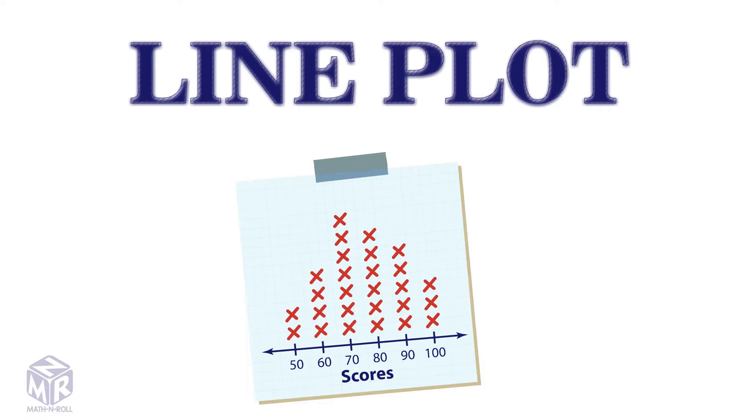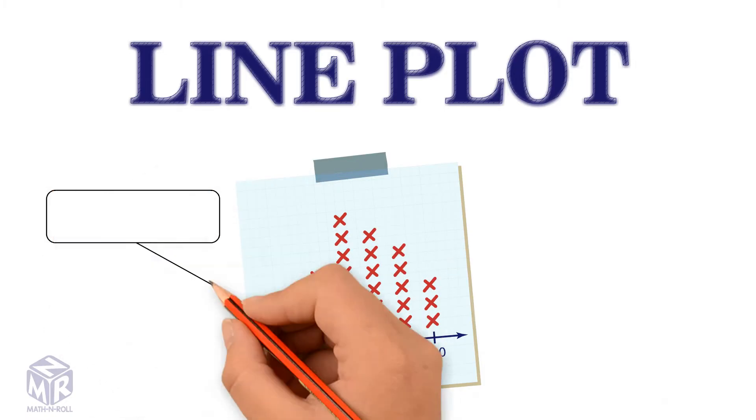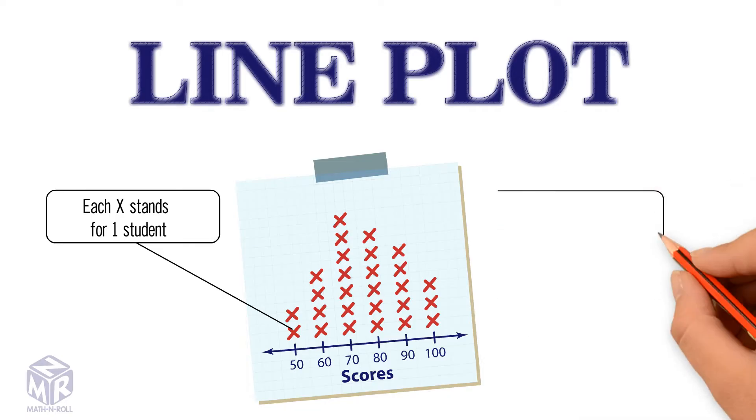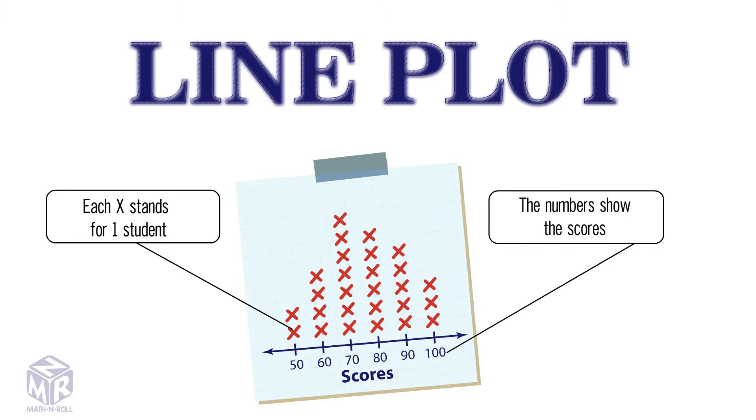This is a line plot. What does the line plot show us? It shows the scores that students received on a test. Each x stands for one student. The numbers below the number line show the scores that they received on the exam.